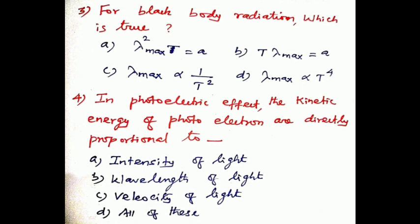Question number four: in the photoelectric effect, the kinetic energy of photoelectrons are directly proportional to dash. Options: a) intensity of light, b) wavelength of light, c) velocity of light, d) all of these. The kinetic energy of photoelectrons are directly proportional to the intensity of light, so option a is the correct answer.